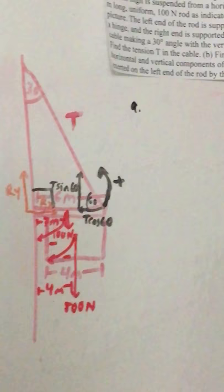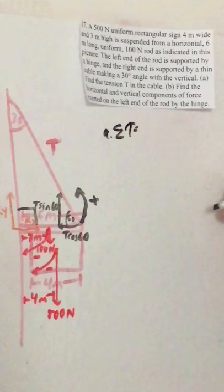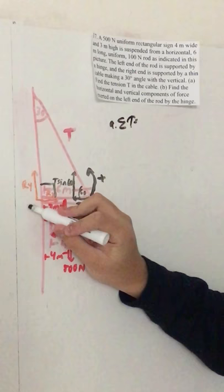So let's do A first. The first step is to calculate all the torques. Because the sign is stationary, all the torques equal zero.